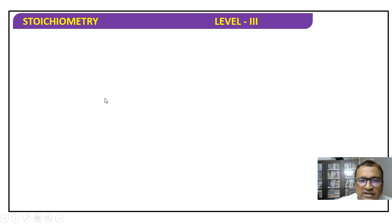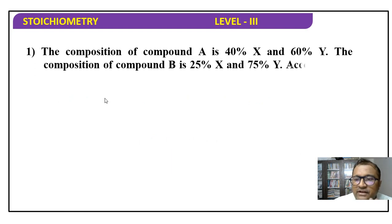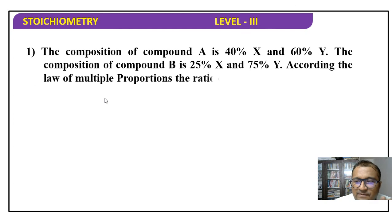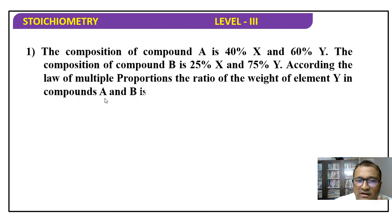Welcome students, in today's session we are taking some typical questions of stoichiometry. Question number one: the composition of compound A is 40 percent X and 60 percent Y, and the composition of compound B is 25 percent X and 75 percent Y by mass. According to the law of multiple proportions, what will be the ratio of weight of element Y in compound A and B?